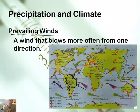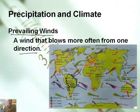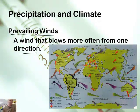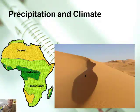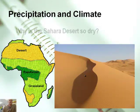A prevailing wind, by the way, is a wind that blows more often from one direction. Now, is this the way the wind always blows? Of course not, but it kind of blows there on average. So let's look at precipitation and climate.